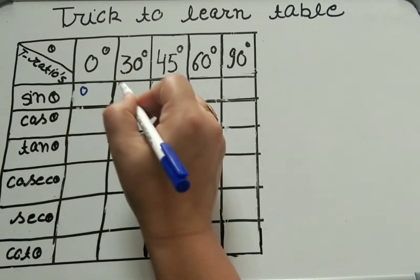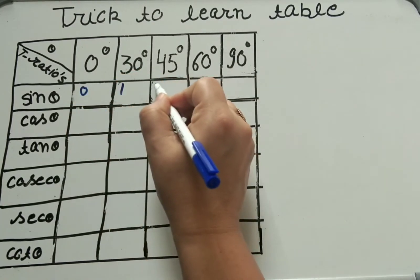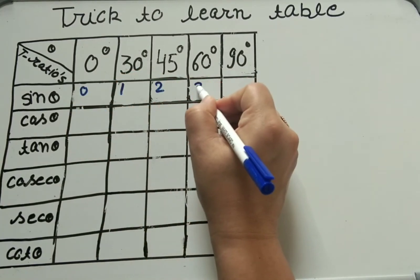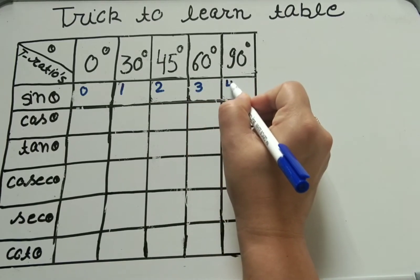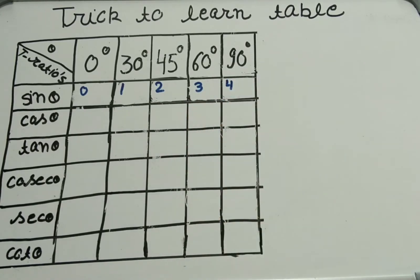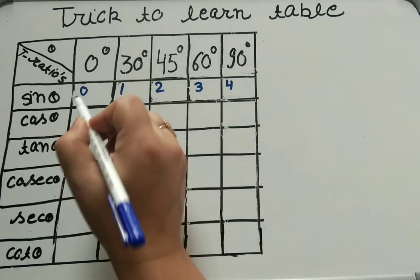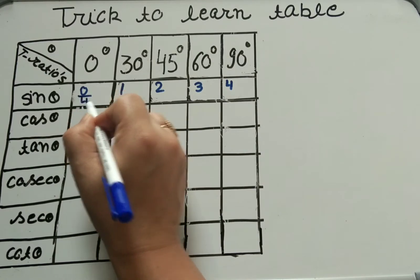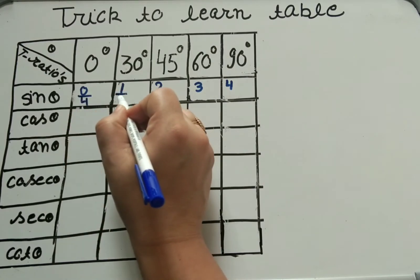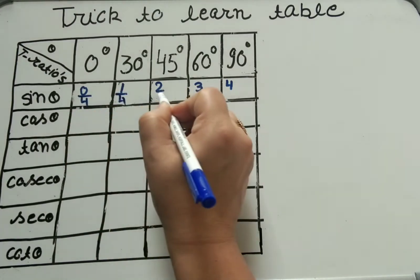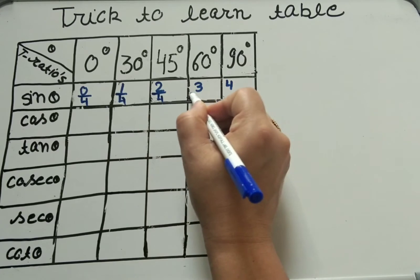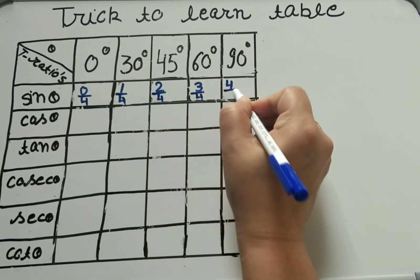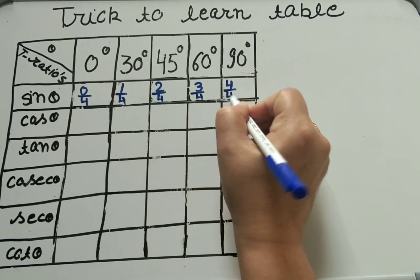We write numerators as 0, 1, 2, 3 and 4. In fraction form, the denominator we take below each one is 4, 4, 4, 4 and 4.